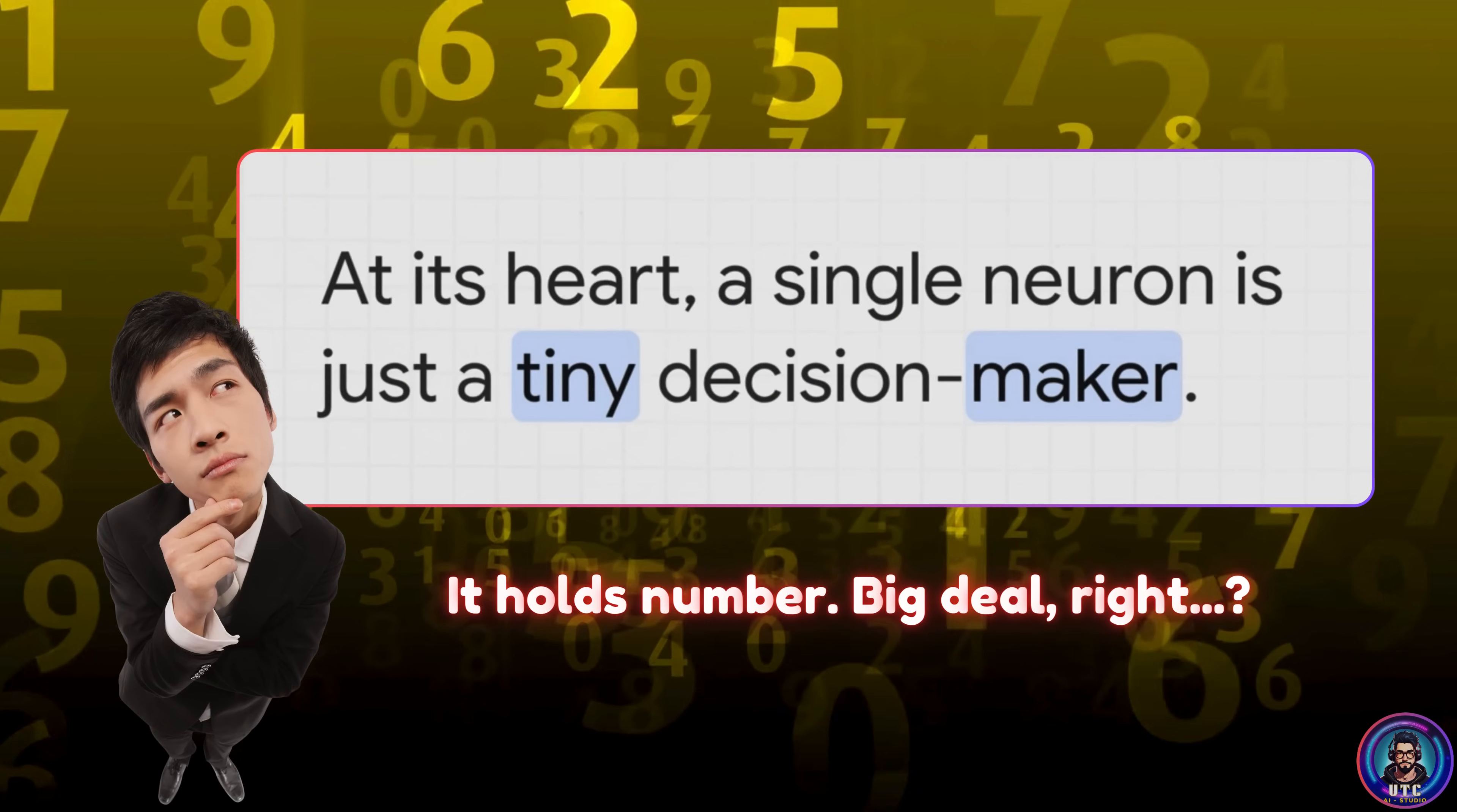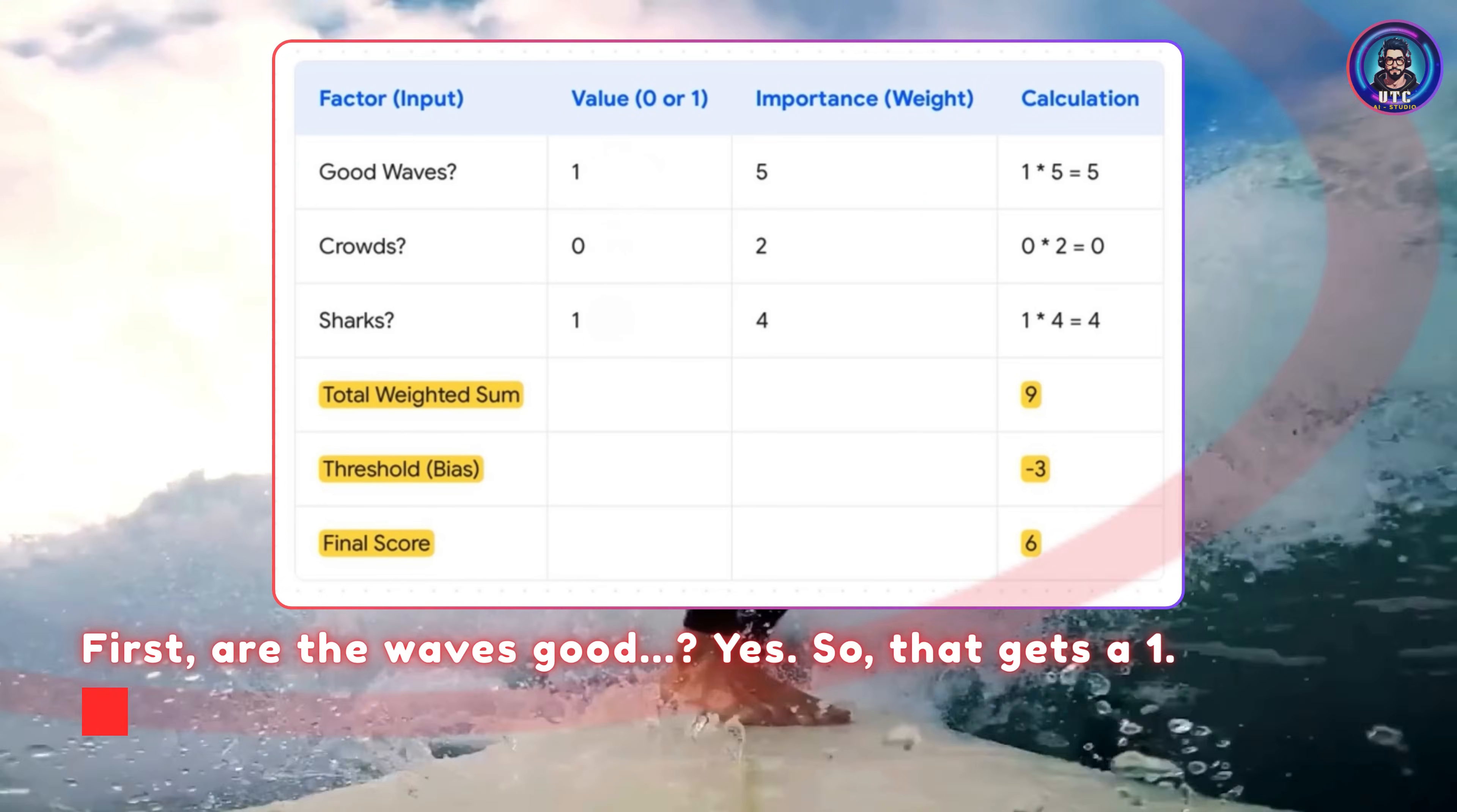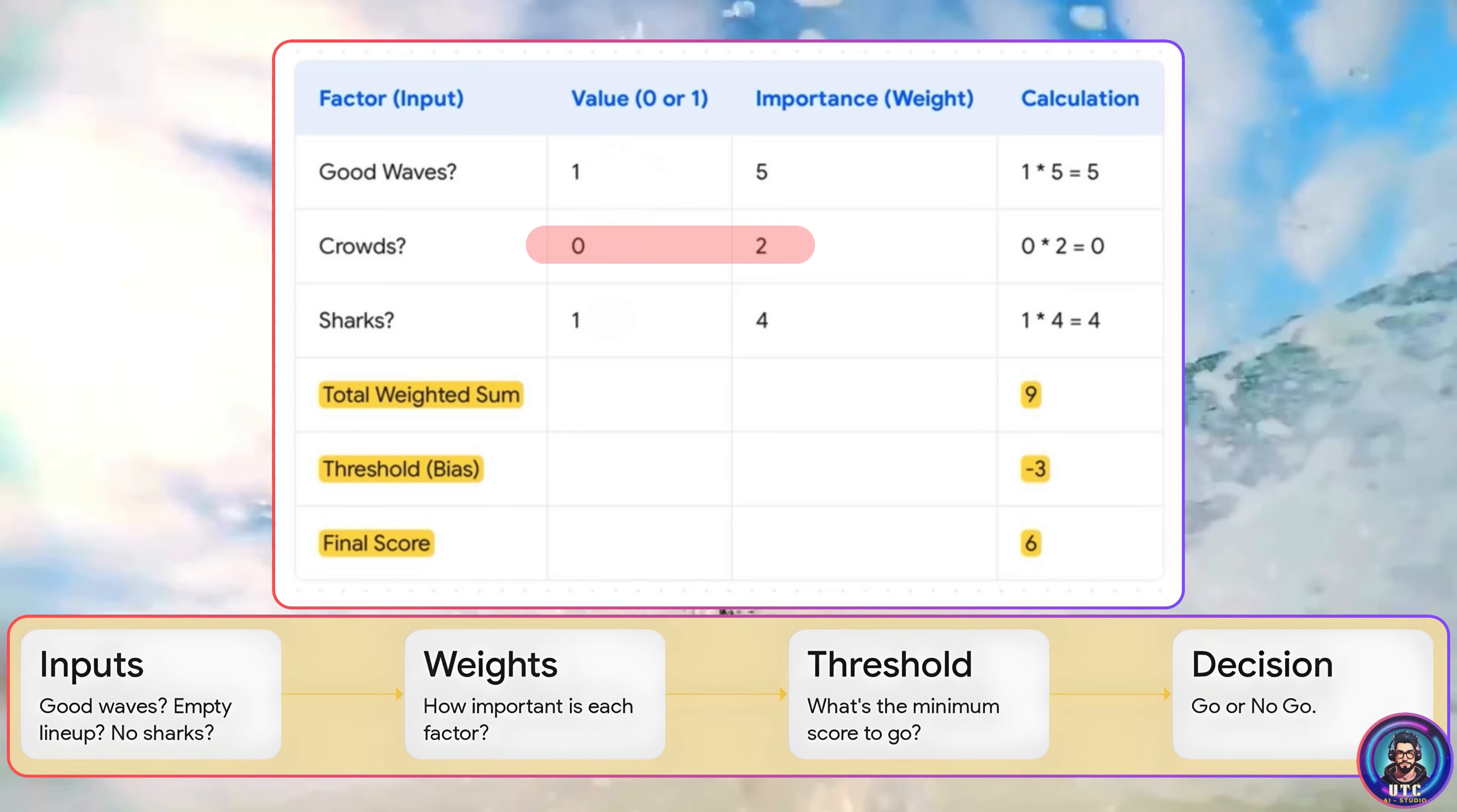All right, it holds a number. Big deal, right? What does it actually do with that number? Well, you can think of a single neuron as a tiny little decision maker. And to really understand how it makes those decisions, let's use a fun everyday example. Let's say our little neuron needs to make a classic decision. Should we go surfing or not? So it looks at a few things. First, are the waves good? If yes, it gets a 1. Second, is it crowded? If yes, for the factor of empty lineup, that's a 0. And third, are there sharks? If no, that's a 1 for being shark free. Now here's the key. Not all these factors are equally important. So we give them an importance, which we call a weight. Good waves are a huge deal. So that gets a high weight. Let's say 5. Being shark free is also pretty important. So that's a 4. And crowds less of a deal breaker. So that's a 2.